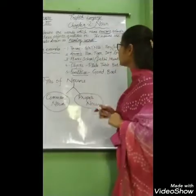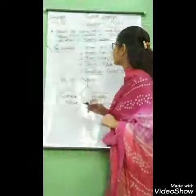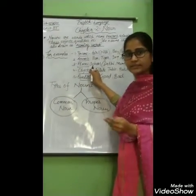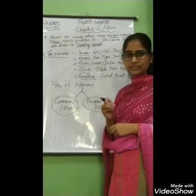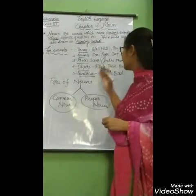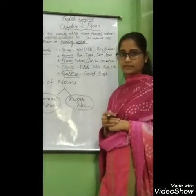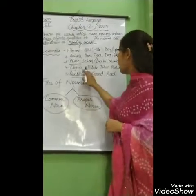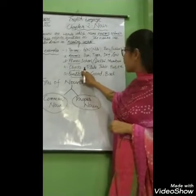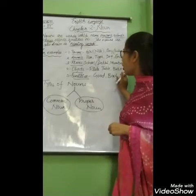And the next one: place. It is the name of a particular place. Suppose your school — St. Thomas School — it is a particular place. And Delhi, Mumbai — these are also particular places. Next, object. Objects include plate, table, buses — they are objects.